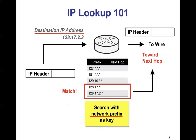When a packet arrives at the network router, the network prefix is extracted from the destination IP address. As shown in the figure, 128.17.22.3 is a destination IP address. This IP address is used as a key to search for a match in the routing table to find the next hop to forward the packet to.